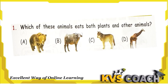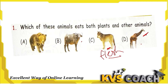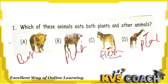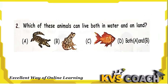Question 1: Which of these animals eats both plants and other animals? Bear eats both plants and animals — correct. Buffalo eats only grass — plant eater. Wolf eats only meat — flesh eater. Giraffe eats only plants — plant eater. So bear is the correct answer.